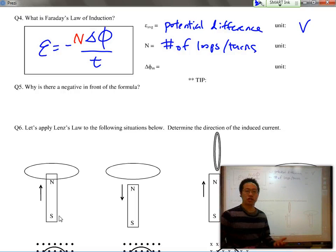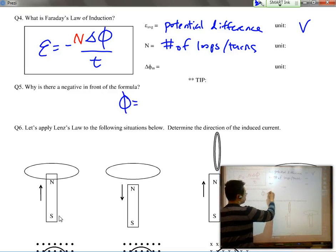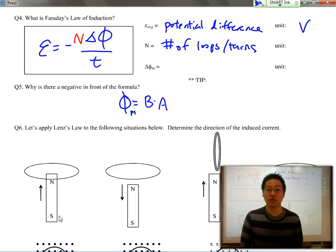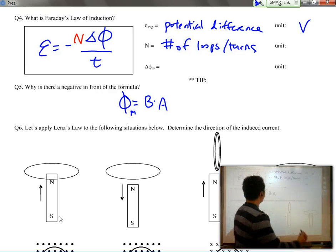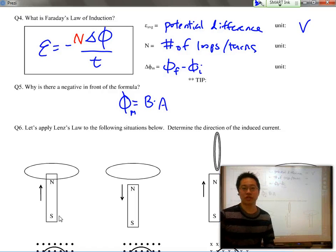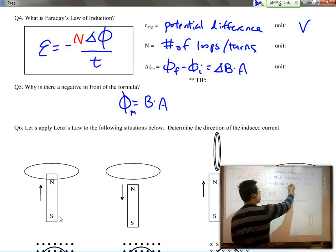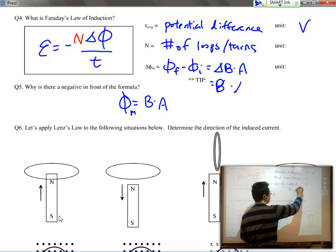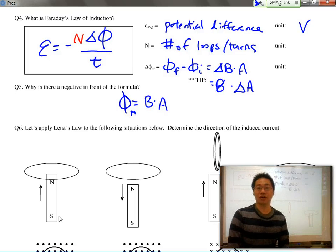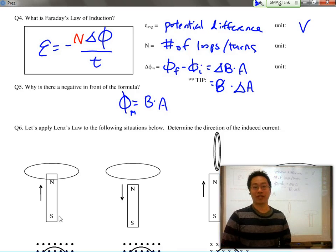Whenever we talk about the change in flux itself, remember our original formula for flux was B times A. So when we talk about a change in flux, you could either calculate the flux final minus the flux initial or you could take the change in B times A or B times the change in A. Basically just understand that the change in flux itself is dependent upon magnetic field and the area through which the magnetic field is going through.